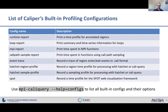Here's a list of built-in configurations. We have runtime_report, loop_report which prints iteration profiles, mpi_report, and calpa sampling — these all print human-readable text reports. Then there are configurations that produce files for post-processing with automated scripts or tools, and the cali-query program for Caliper's own data. The cali-query program has a helpful --help-configs switch to list all available profiling configurations and their options.